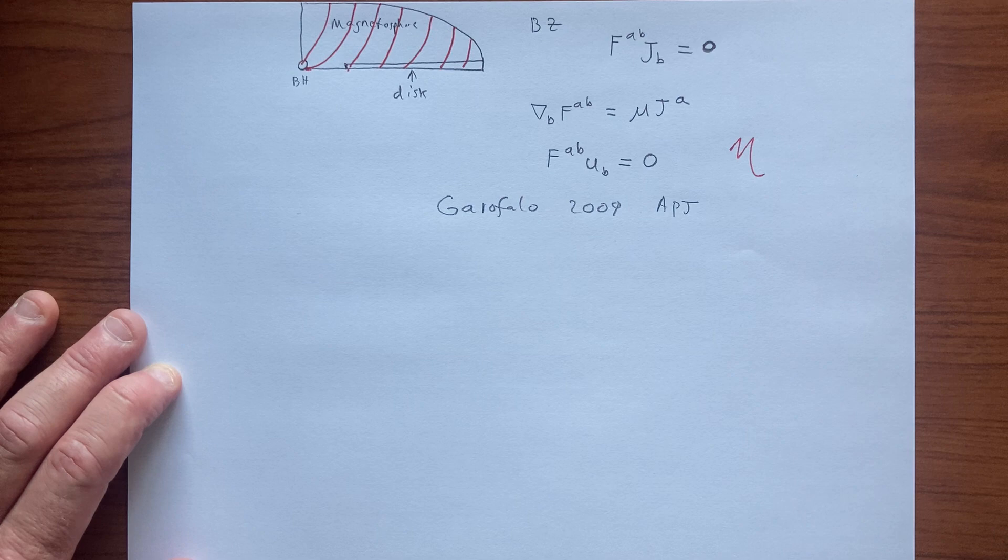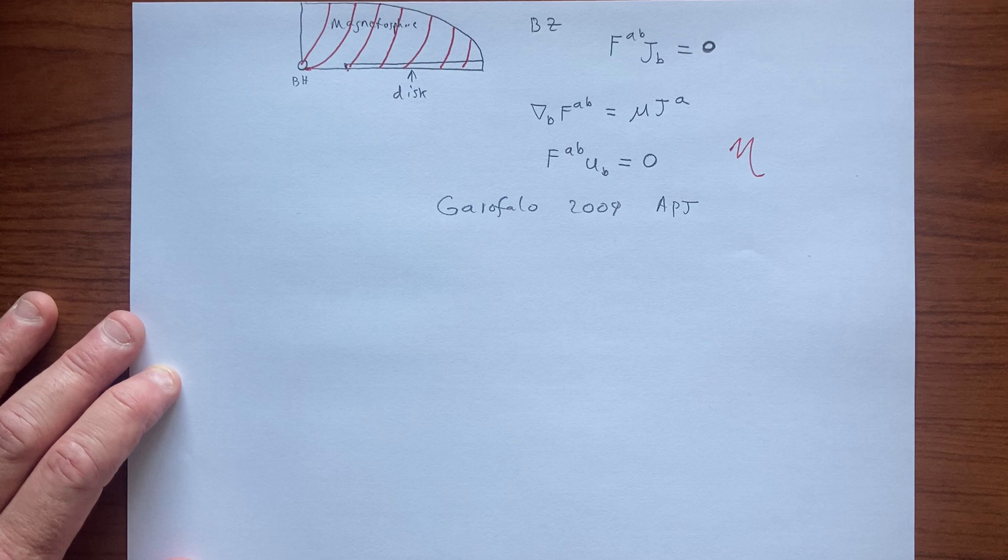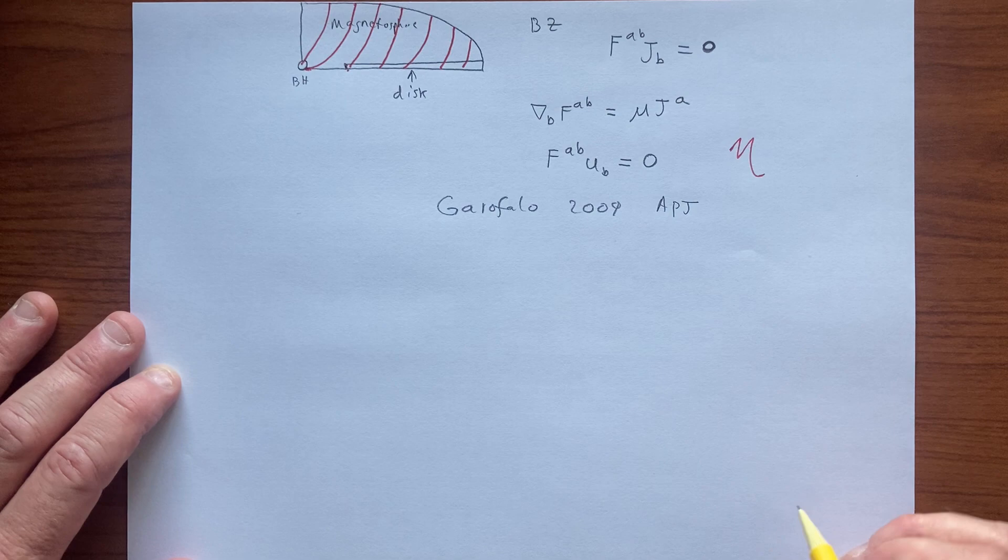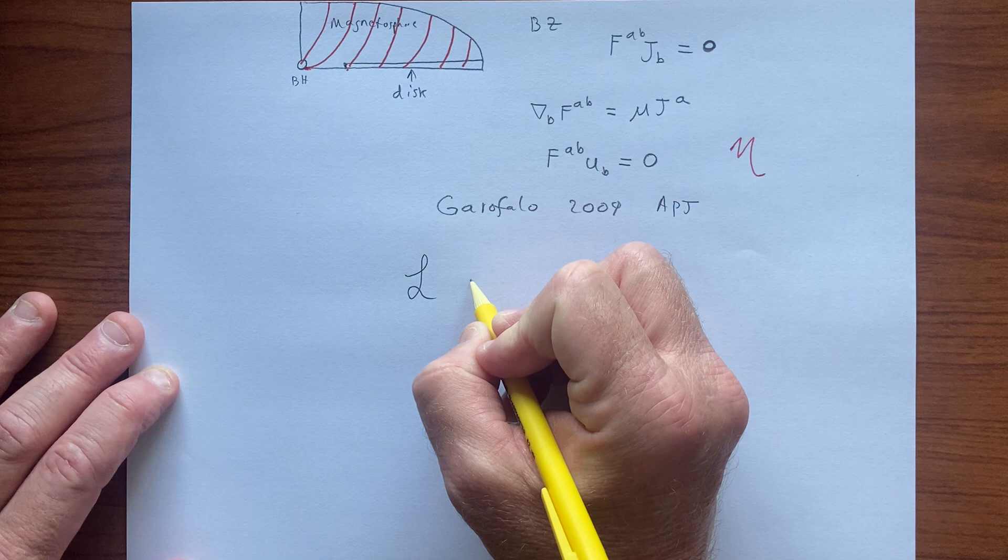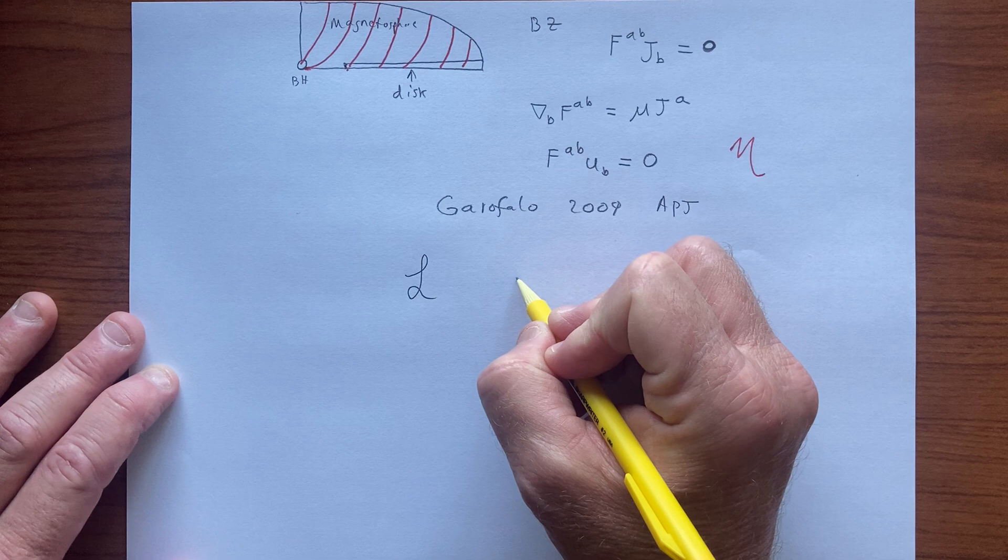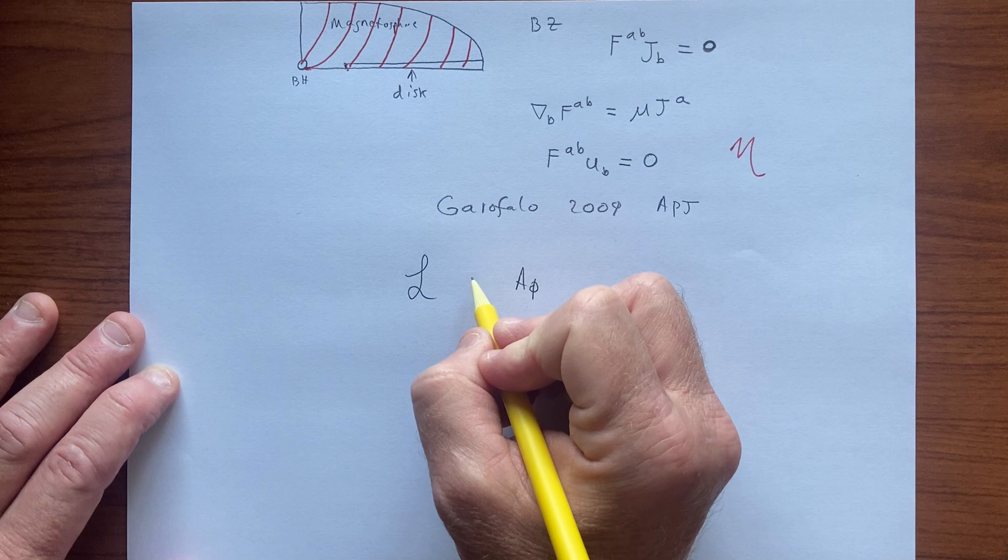The power of the jet depends on the magnetic flux. According to the theory, the magnetic flux A5 has this dependence, so we solve for A5, and that way we manage to get the jet power that's generated from the black hole.